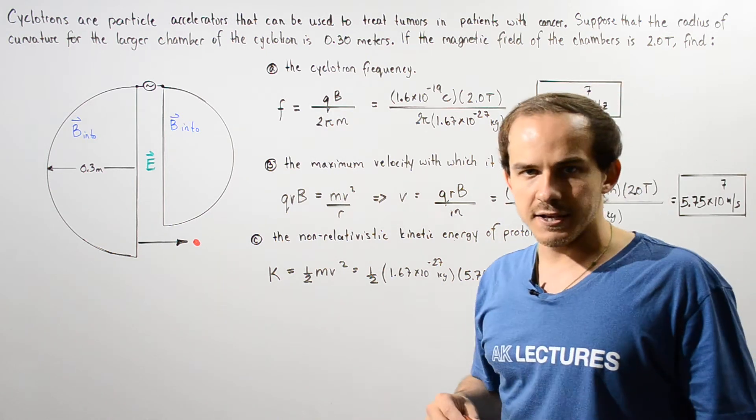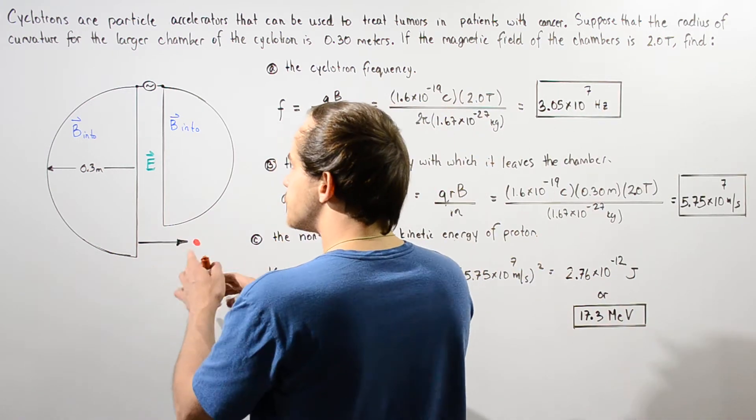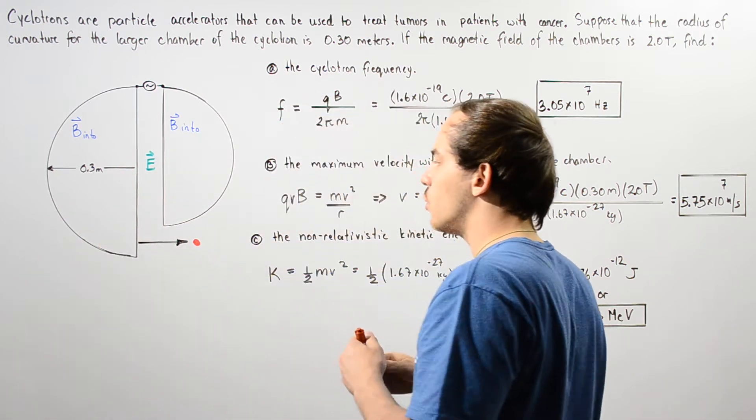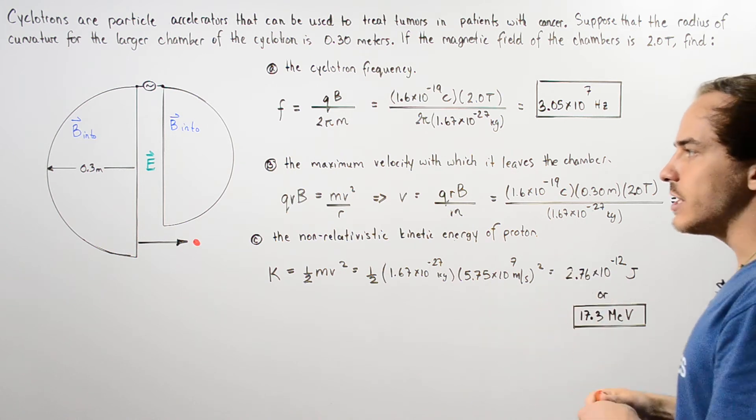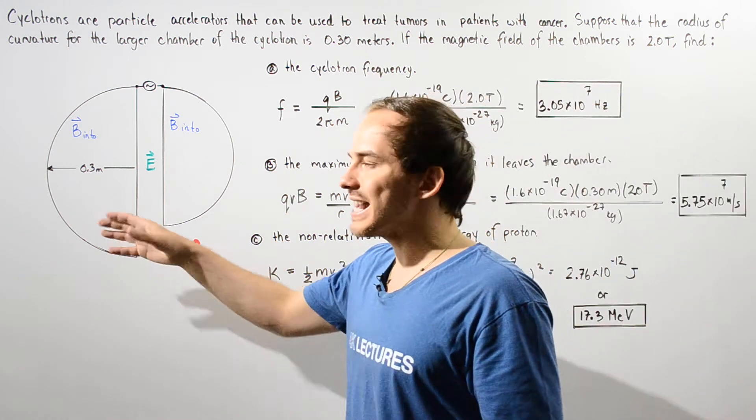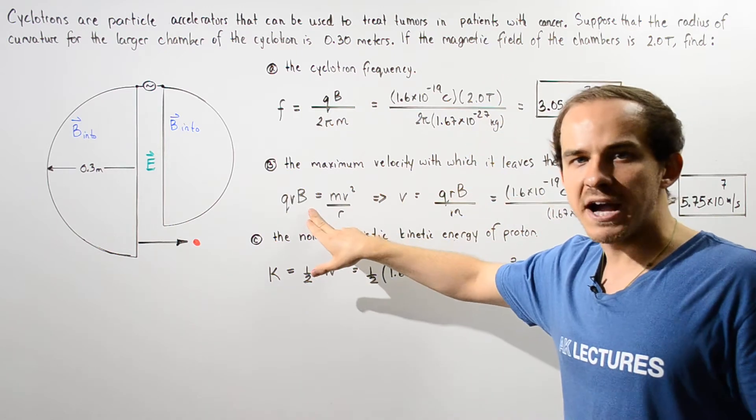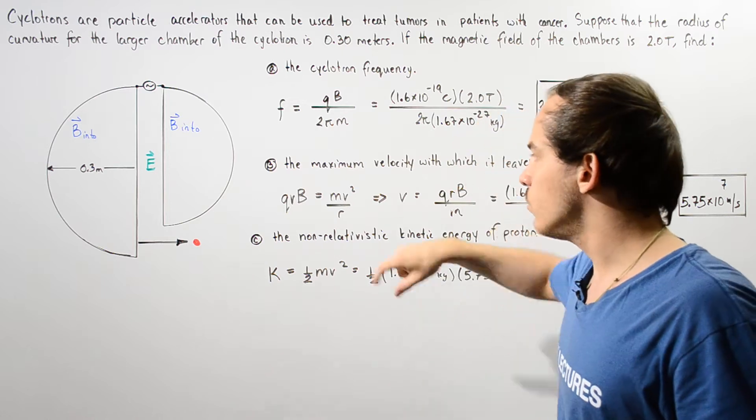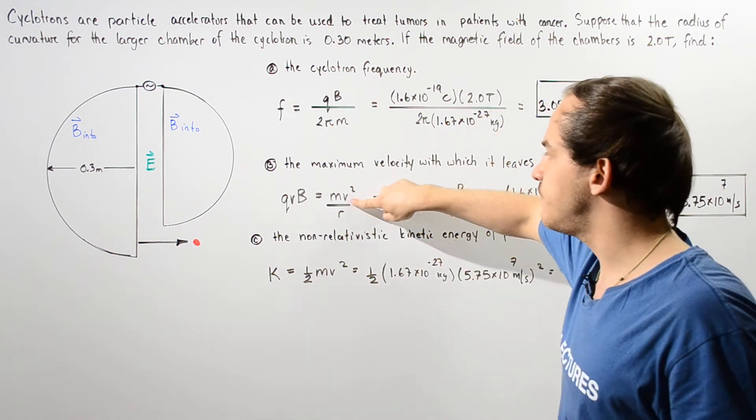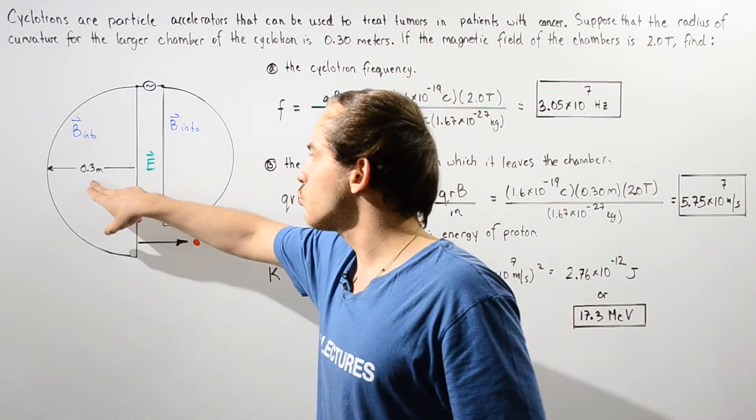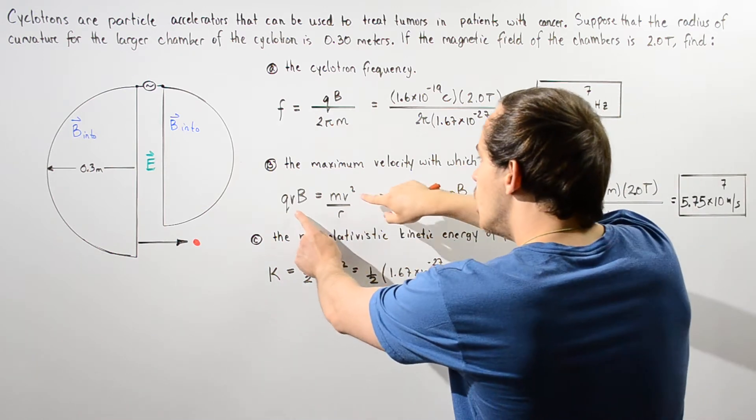Now let's move on to part B. Find the maximum velocity with which our proton leaves our chamber, as shown in this diagram. So basically we want to equate the magnetic force acting on our particle, q × v × B, to m × a, where a is the centripetal acceleration. So a is v² divided by r, where r is the radius of curvature of this larger chamber.